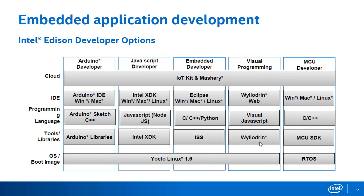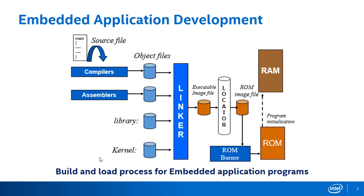How do we develop an embedded application? How do we design hardware and write a program or design software for a particular embedded application? We will talk about Intel Edison developer options. The main part of Intel Edison is Yocto Linux. If Yocto Linux is not running on Intel Edison, we will not be able to write an Arduino application or write applications using JavaScript, C, C++, Python, and so on.